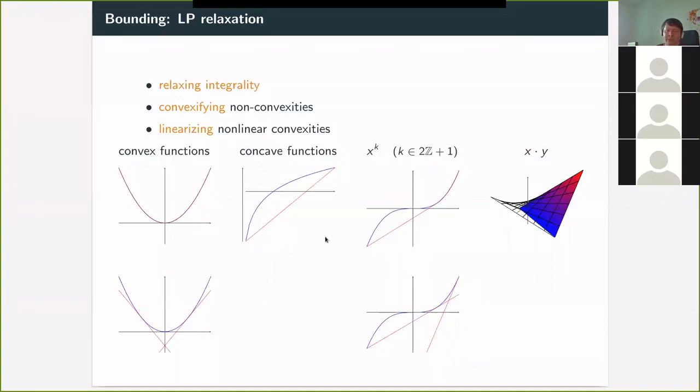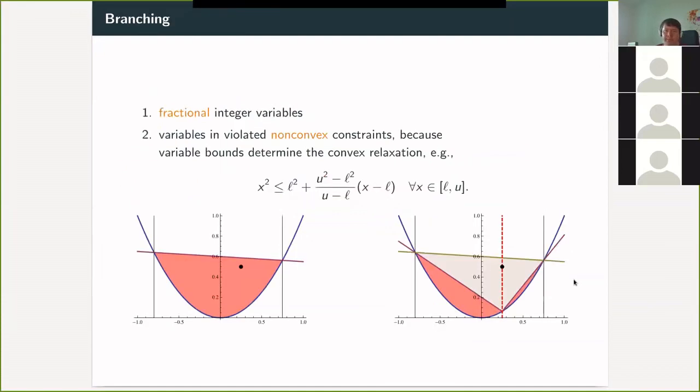And for concave functions, you see also in this case here, you see that the underestimator that is computed here comes out depending on the bounds of the variables. And that's where then the branching comes into play, which happens either on a fractional integer variable, or if there's a constraint that was violated, and which was non-convex, then we branch on a variable in this constraint. And for that in the nodes that are created, we can compute a tighter linear relaxation.